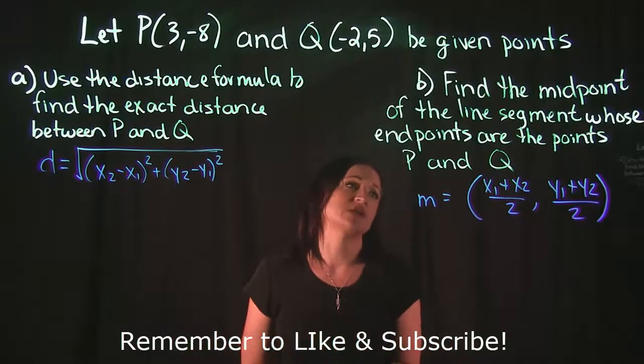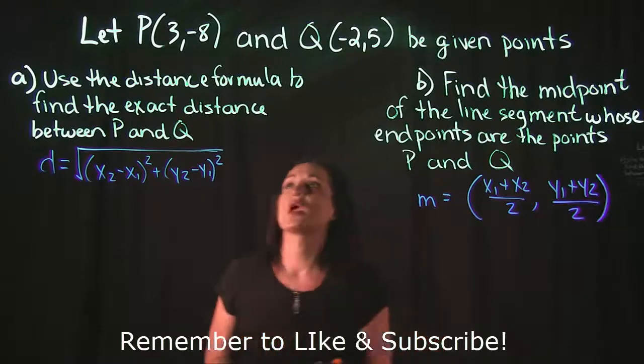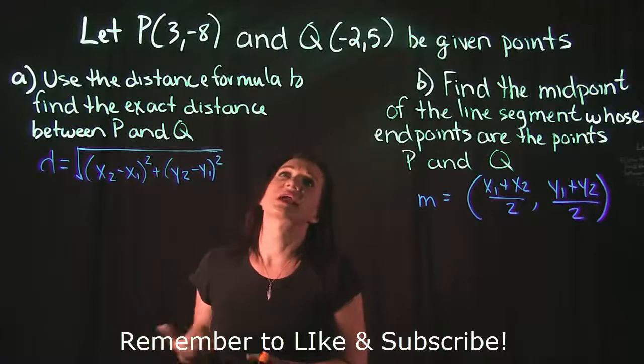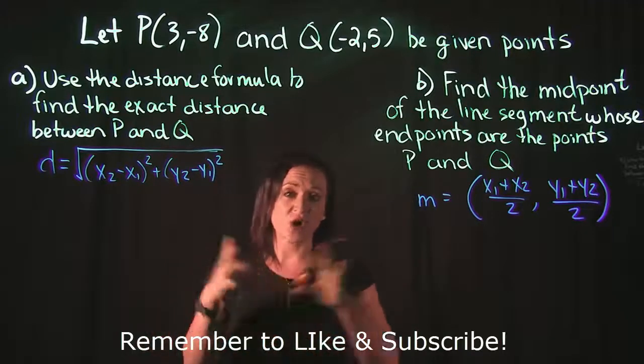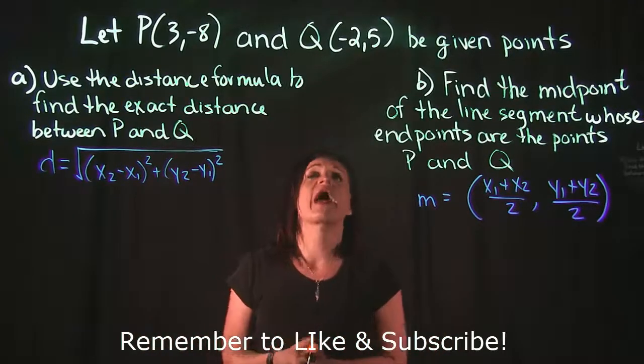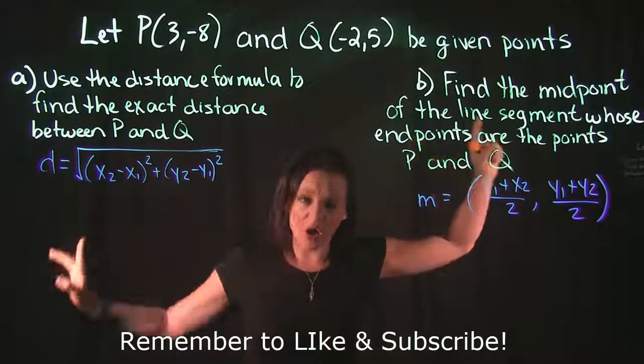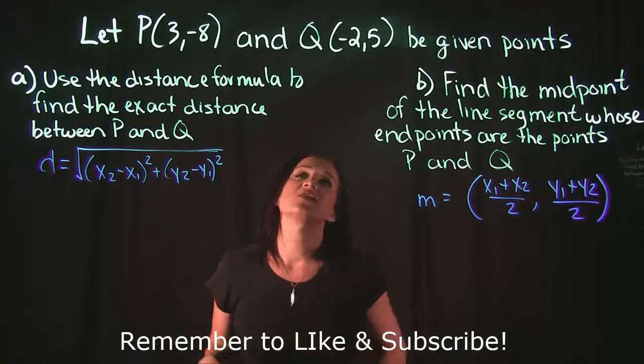If you wanted to get a visual of this, you could plot the points (3, -8) and (-2, 5) on a graph just to see where they're at. We want to find the exact distance, how long this line is, and we also want to find the midpoint of this segment.